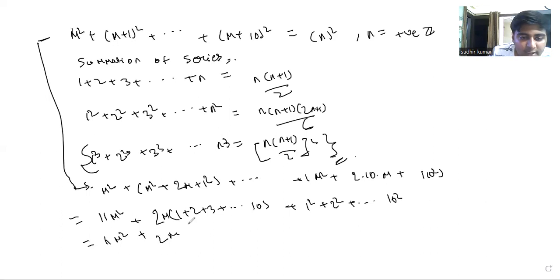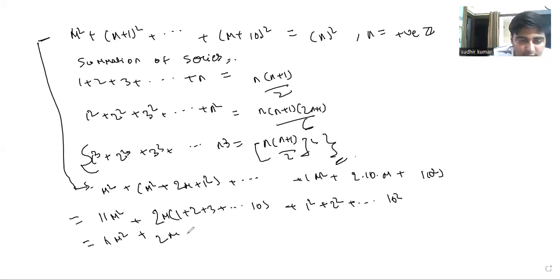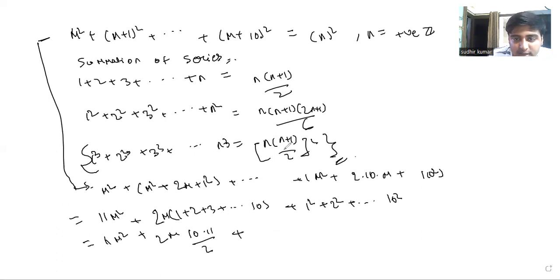We already know the sum of first n natural numbers is n(n+1)/2, and here n=10, giving us 10·11/2 = 55. The sum of squares of first n natural numbers is n(n+1)(2n+1)/6, and here n=10, giving us 10·11·21/6.